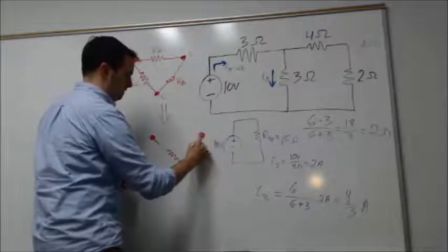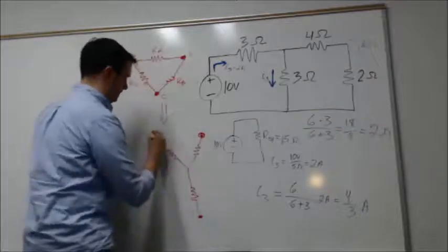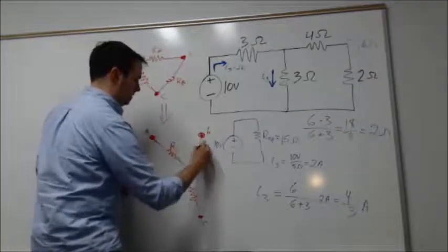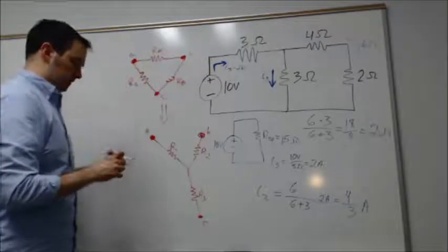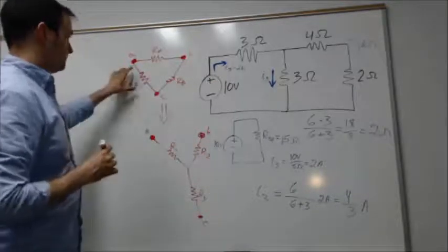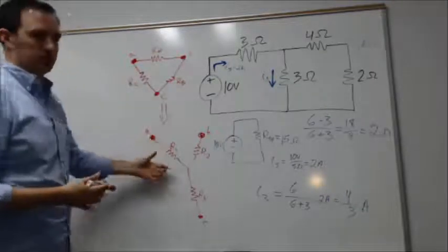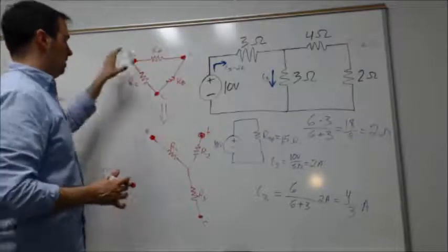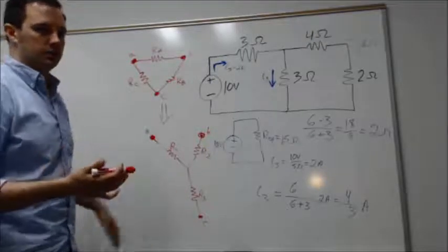We transformed this into the Y configuration, which allowed us to come up with something like this: nodes A, B, C, and then resistances R_1, R_2, and R_3. Always keep in mind these resistances from the delta configuration are not equal to the resistances from the Y configuration.